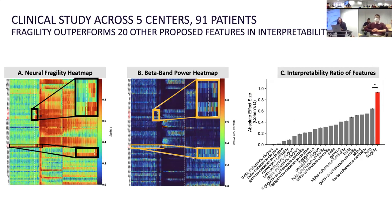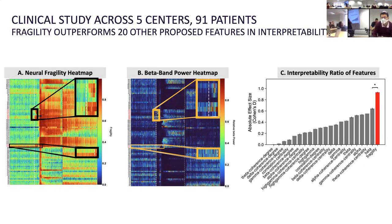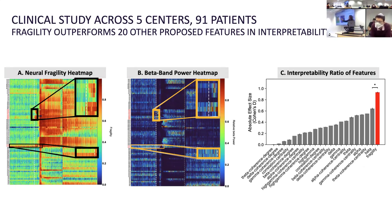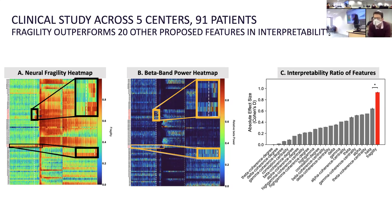We also measured interpretability. Even though beta power carried information — the second highest performing feature — when you look at the actual heat map, the Y-axis is channels and you're looking at a feature over time: left is fragility, right is beta-band power. You see much more contrast in fragility, where clinicians can just look at the map and say, 'right before seizures, these channels became fragile.' It's very hard to do with the beta map — you can't get that same level of interpretability. We think fragility is a bit more interpretable.